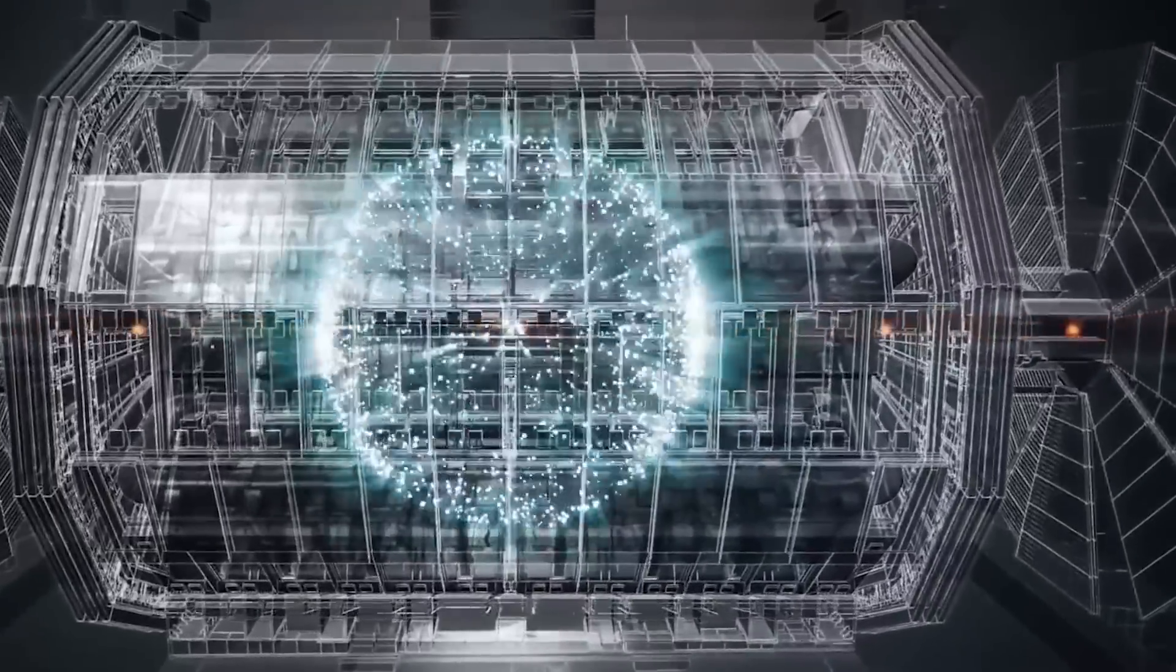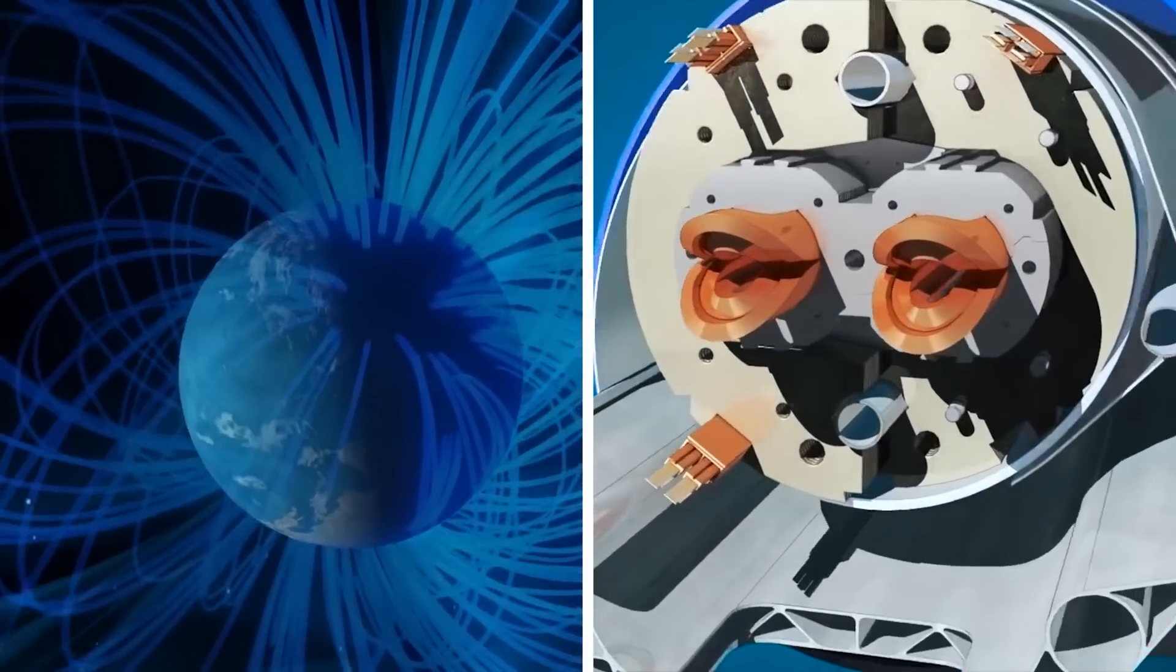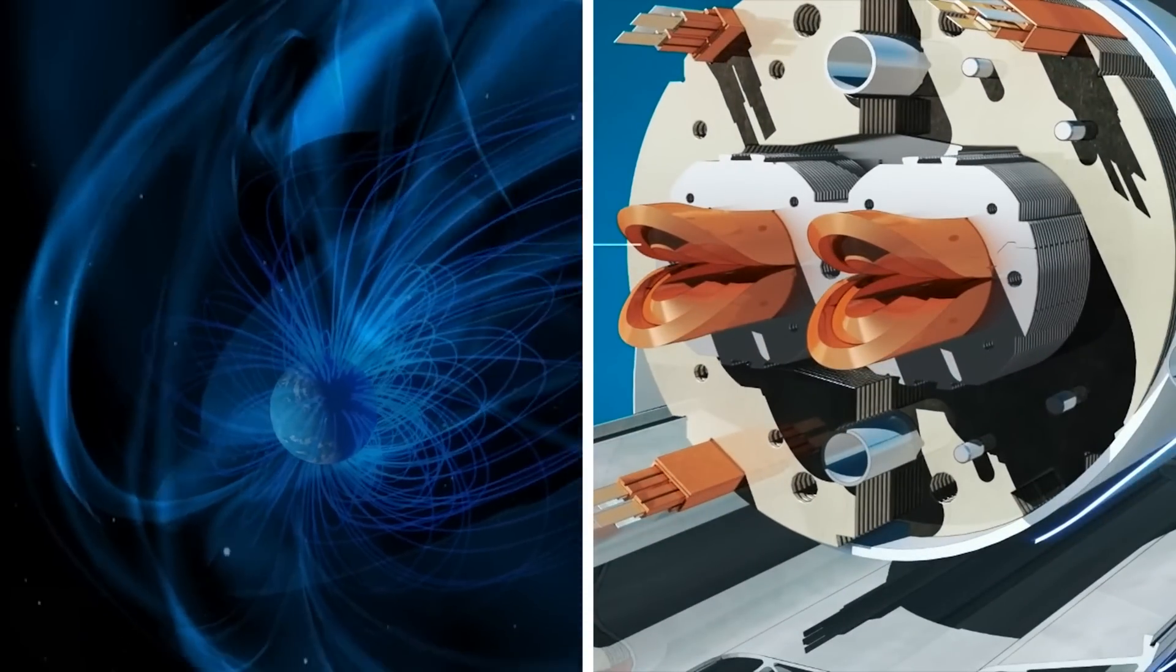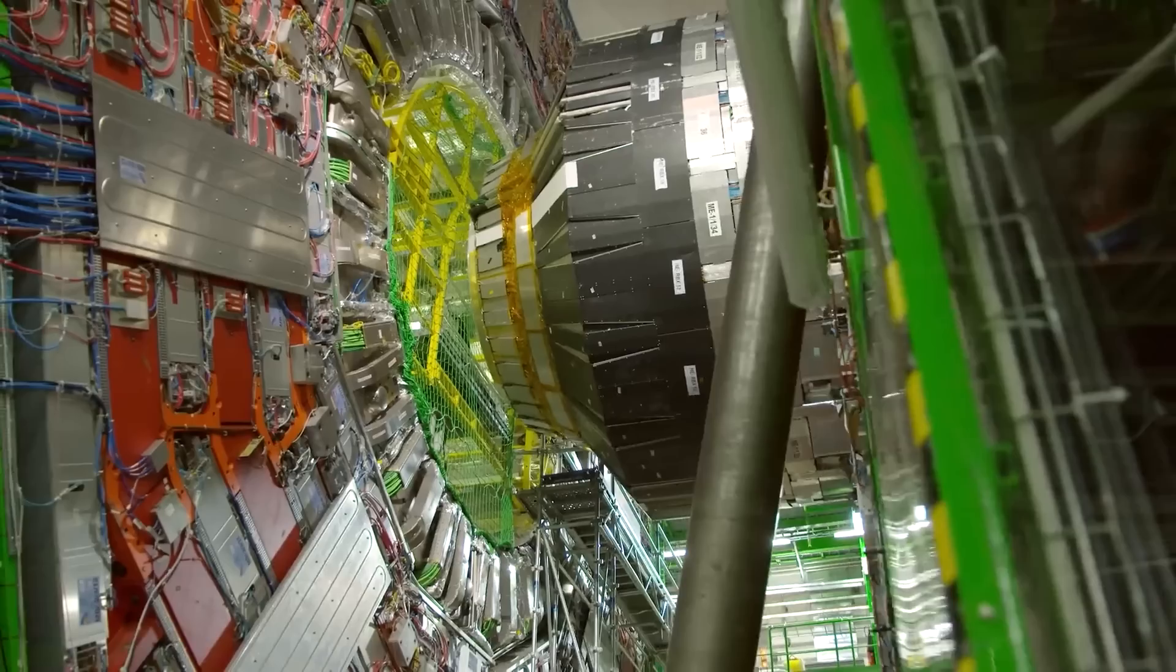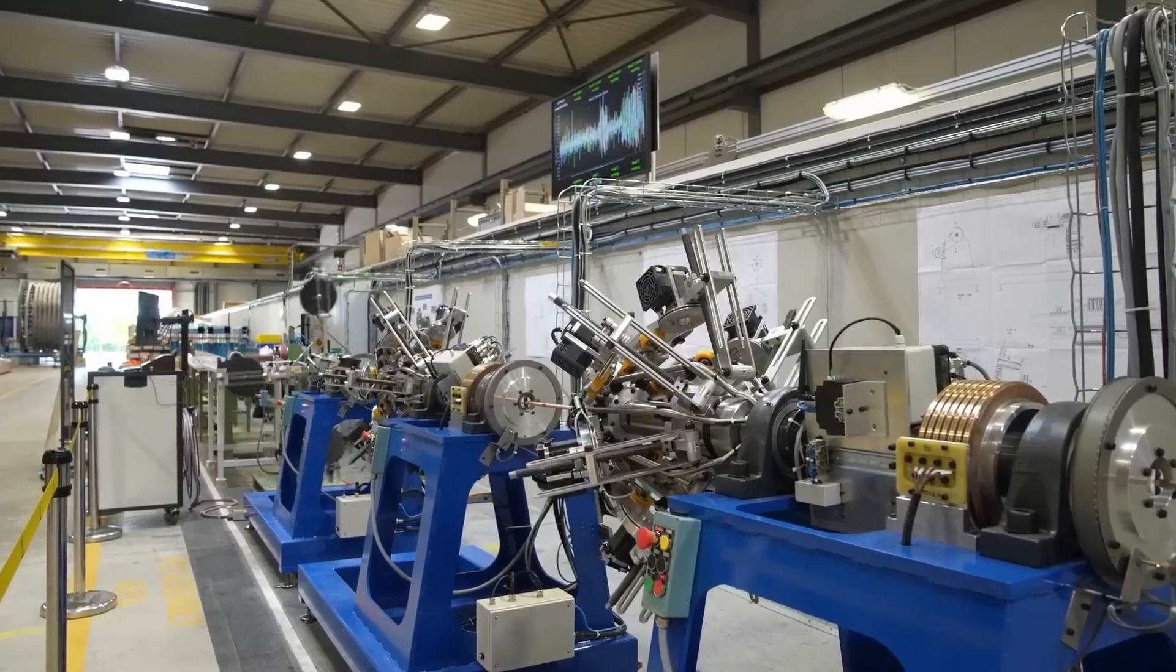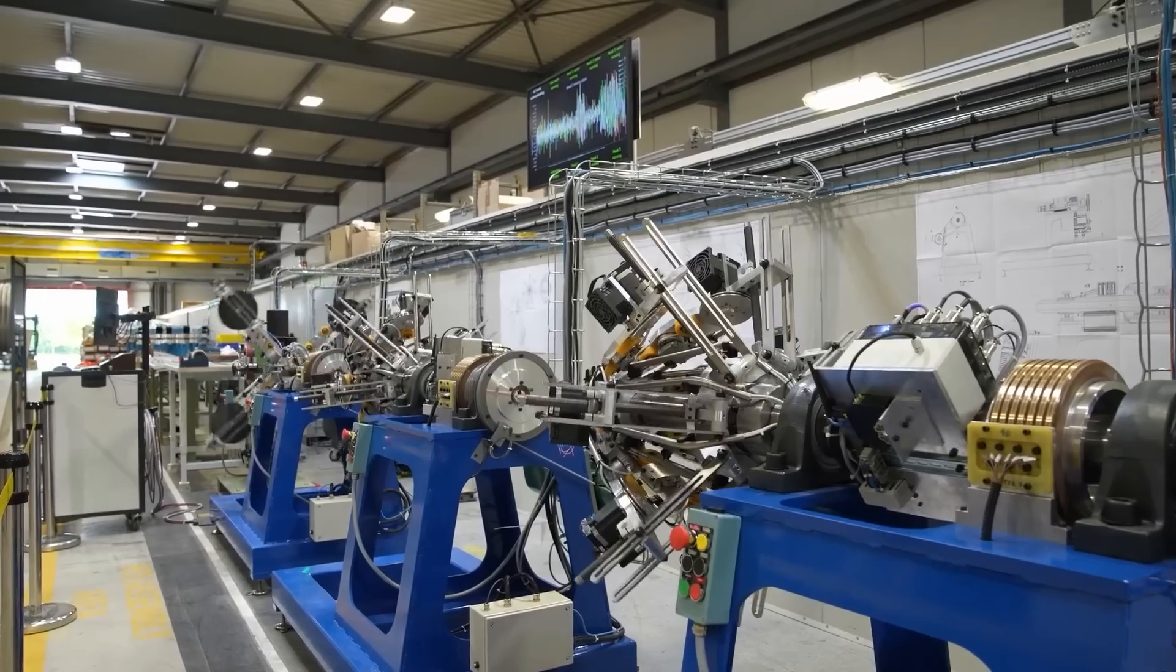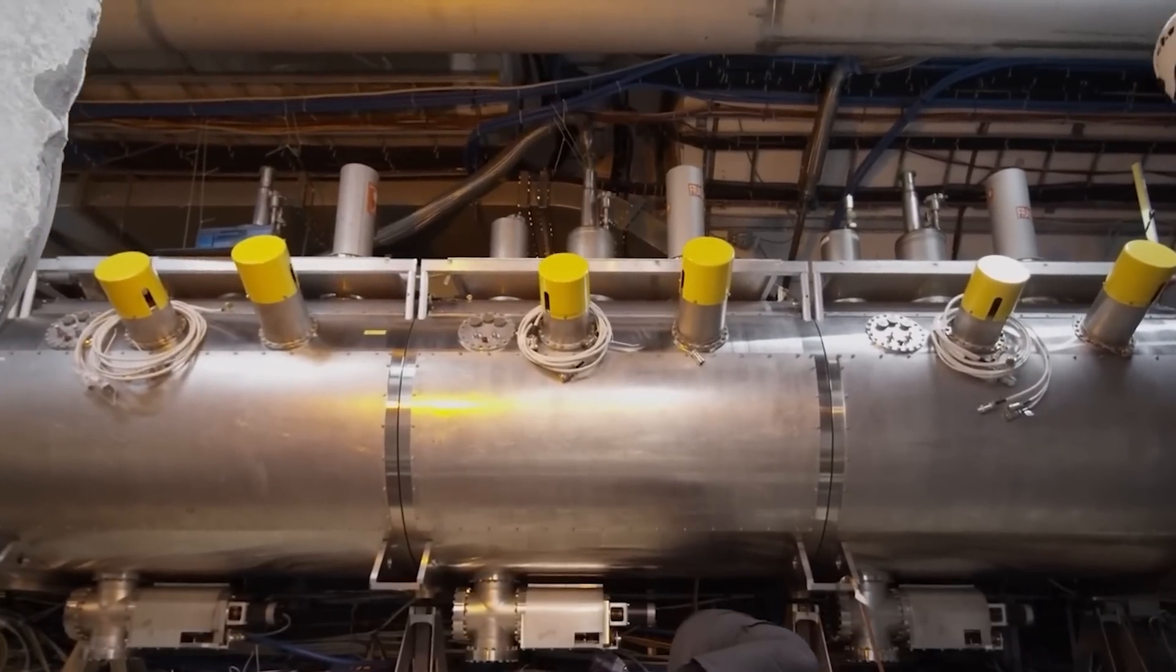To achieve such a feat, over 50 different types of magnets are utilized to guide the particles along their intricate paths, with each magnet serving a unique purpose. The LHC's powerful electromagnets, known as main dipoles, produce a magnetic field 100,000 times stronger than that of the Earth, with each one weighing a colossal 35 tonnes and measuring 15 meters in length.